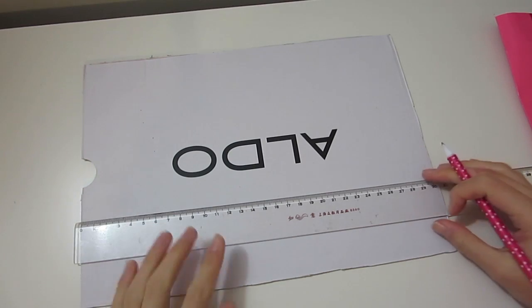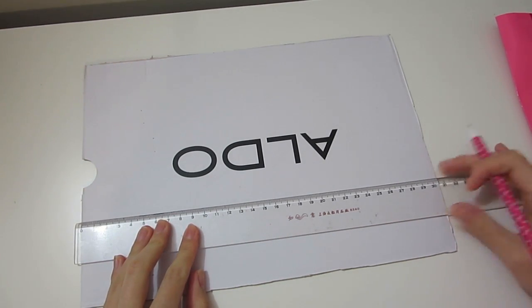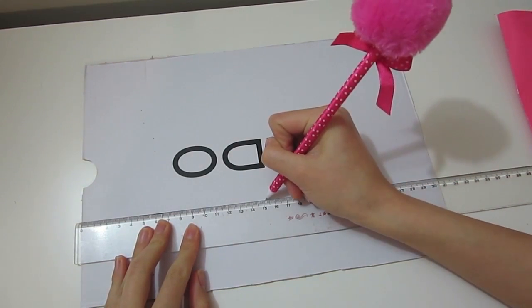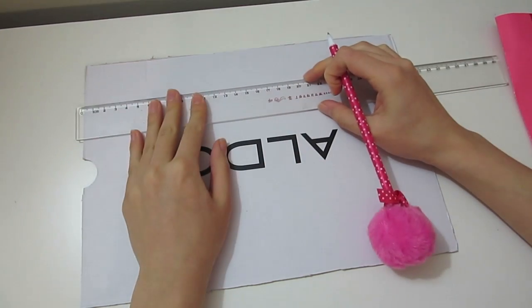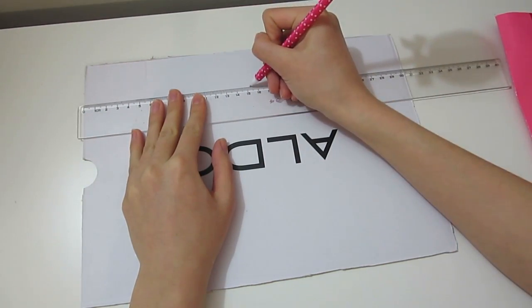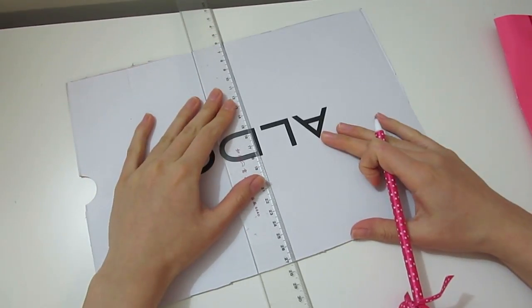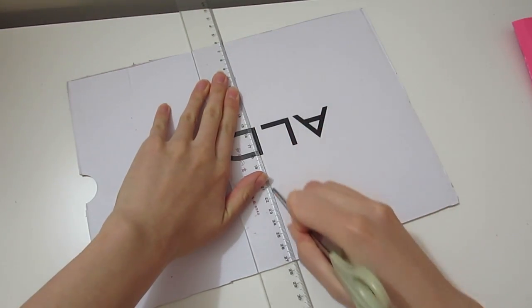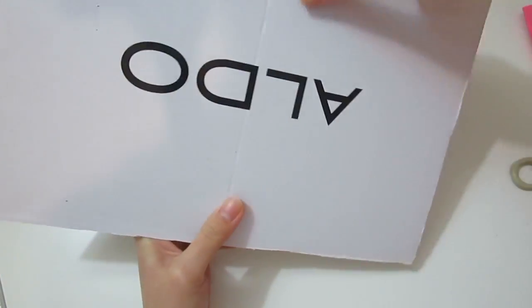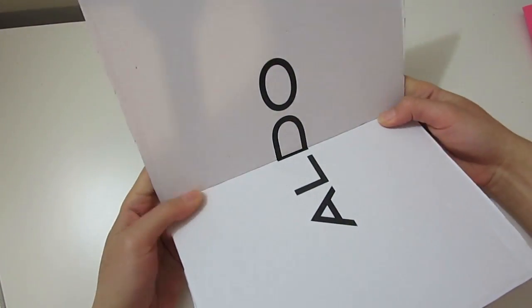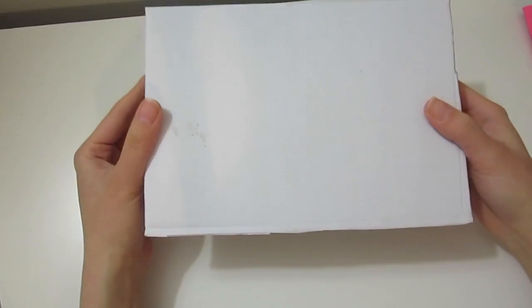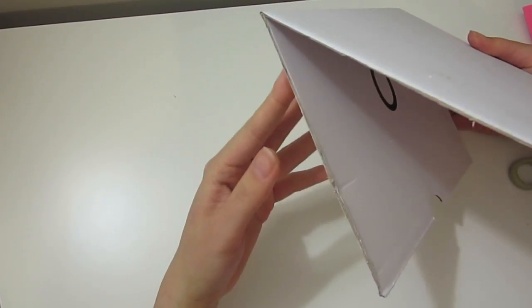The all white side is going to be the front side and the side with the logo is going to be the back. Turn it to the back side and measure out the halfway point of the longer side. Run the back of your scissors along the ruler to make an indentation to guide the cardboard at where to bend when you bend it in half. This is the basic structure for the stand.